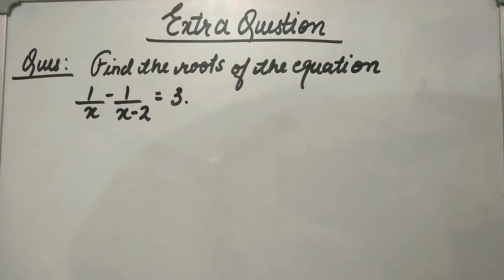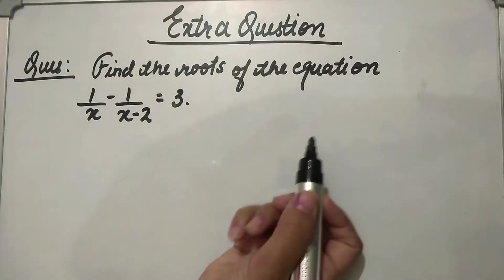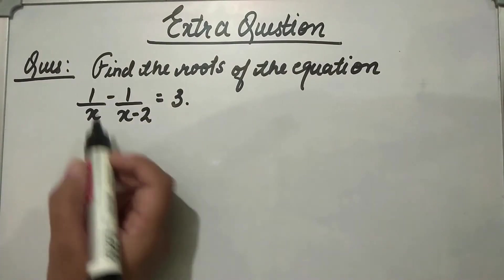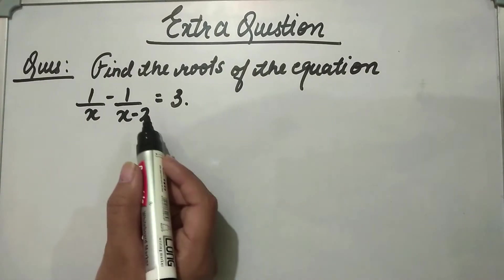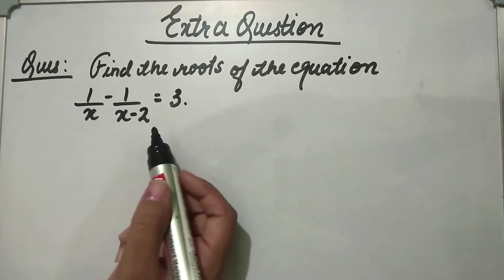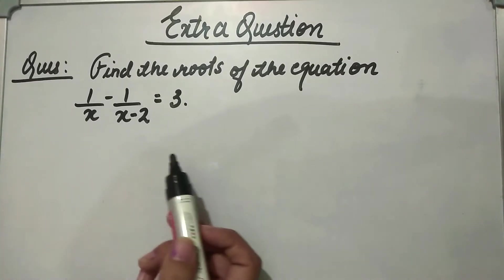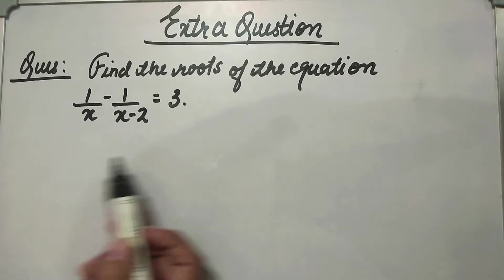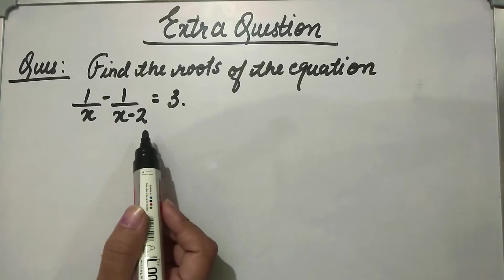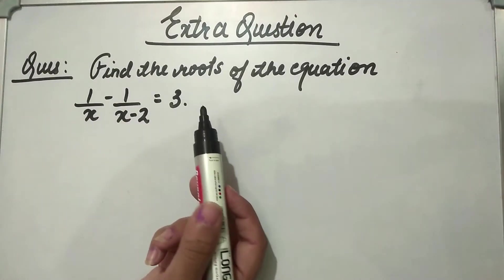Hello guys, welcome back to my channel Plus Minus Maths. Today's question is: find the roots of the equation 1 upon x minus 1 upon x minus 2 is equal to 3. In this question, we have not been given a direct equation, so first we will solve this equation and then find the roots.